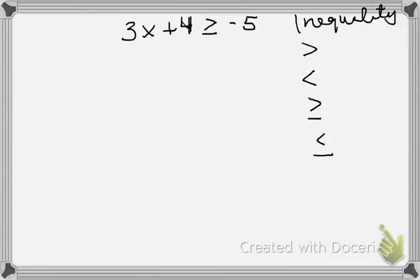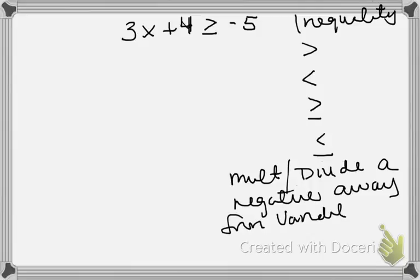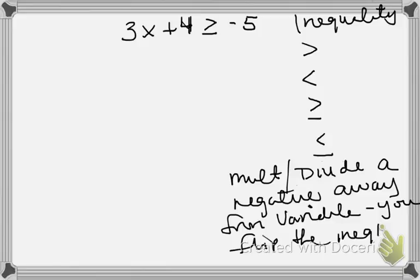There is one special rule: whenever you multiply or divide a negative away from the variable, you flip the inequality. We're going to flip it if we multiply or divide a negative away from a variable — not add and subtract, just multiply and divide.